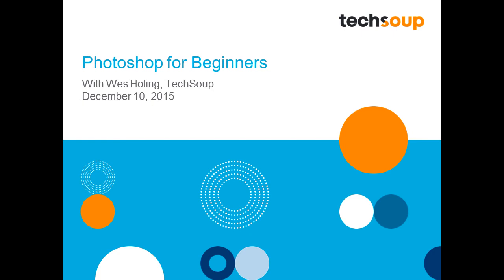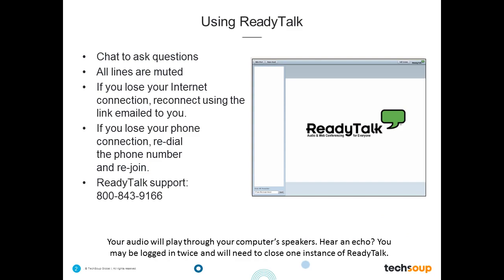During this webinar, you're going to have the opportunity to ask questions and learn more about Photoshop. At the end of this presentation, there's going to be a survey which is super important for you to complete — it will help us understand what you've learned and help us improve our presentations. We want to make sure everyone is comfortable using ReadyTalk. In the bottom left-hand corner is a chat box you can use at any time if you're having problems viewing the slides or hearing the audio. The chat box is also for your questions, and we'll have a Q&A session at the end. All the lines will be muted so that we can record this presentation for later viewing.